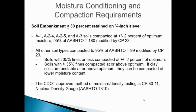There are two types of soil embankment. The first has less than or equal to 30% retained on a three-quarter-inch sieve — these materials can be tested with proctors and a nuclear density gauge. A1, A24, A25, and A3 soils will be compacted at plus or minus 2% of optimum moisture and 95% of AASHTO T180 (modified proctor), modified by Colorado Procedure 23. All other soil types are compacted at 95% of AASHTO T99 (standard proctor), also modified by Colorado Procedure 23.